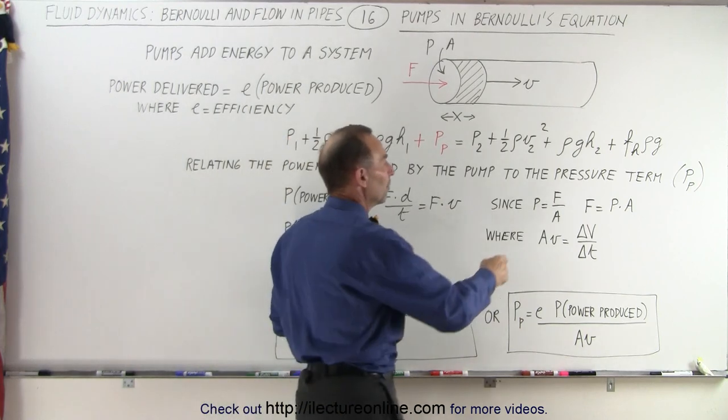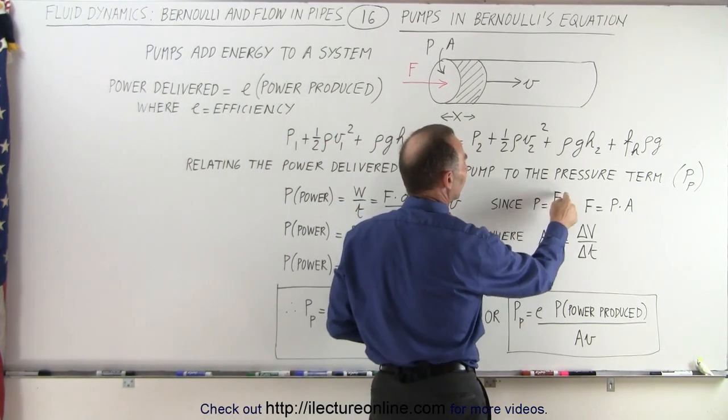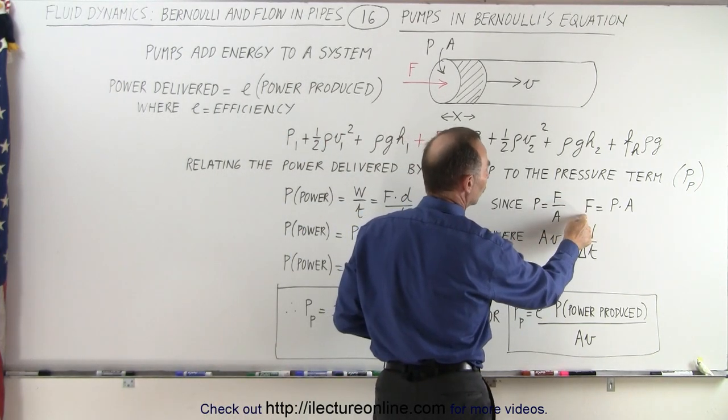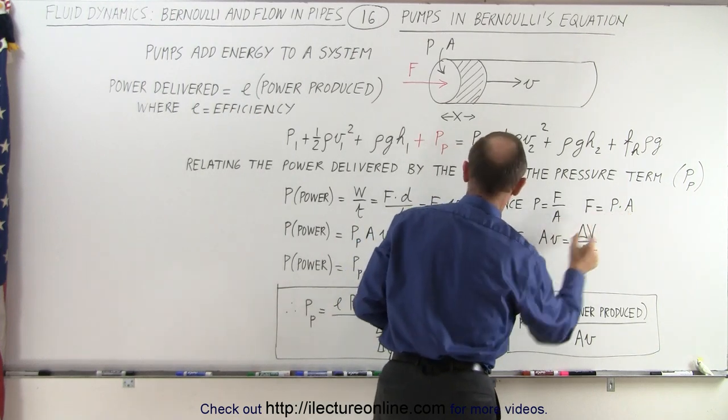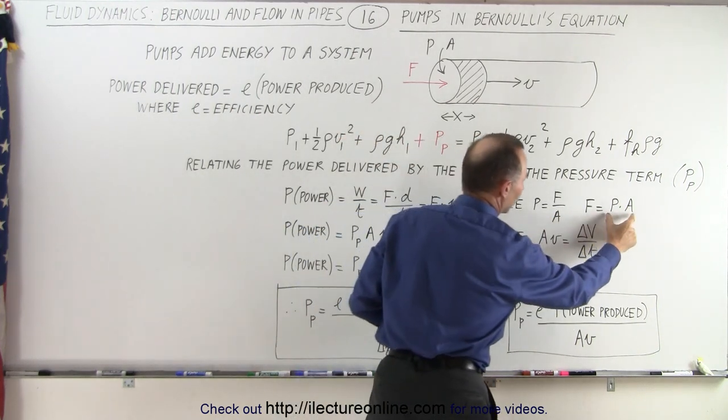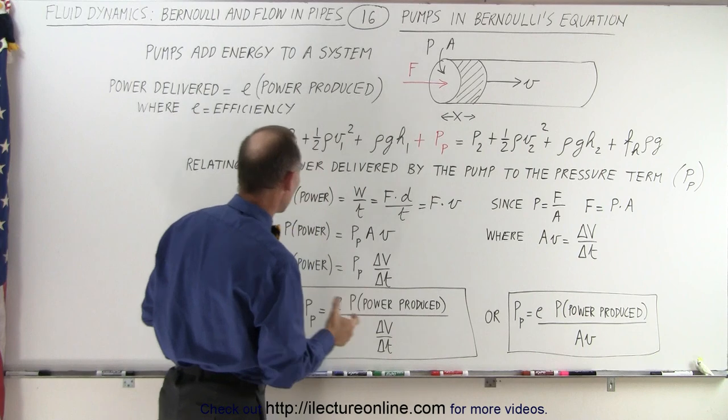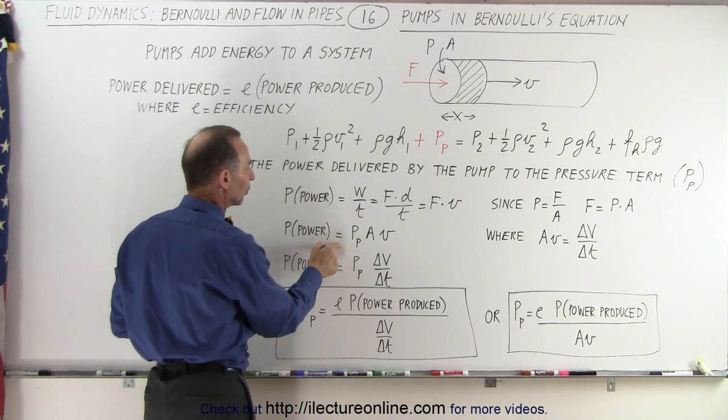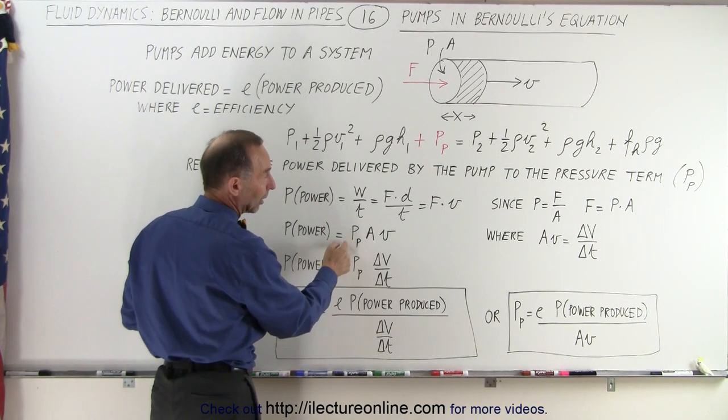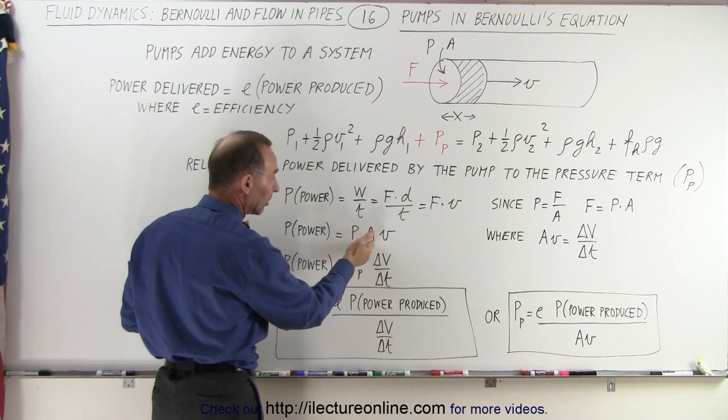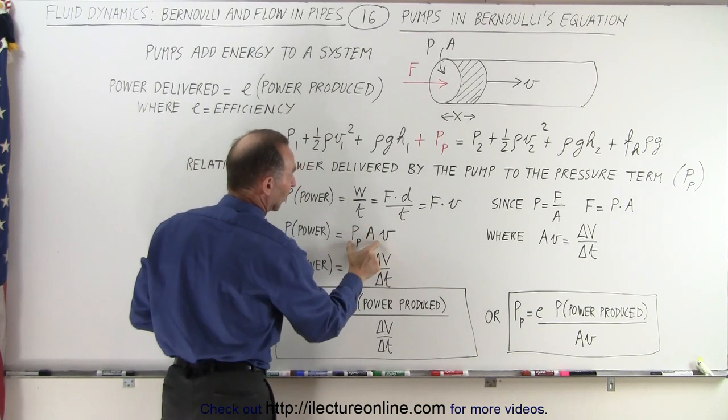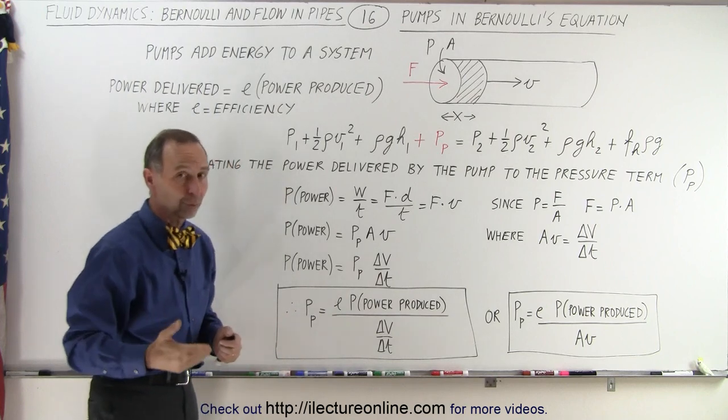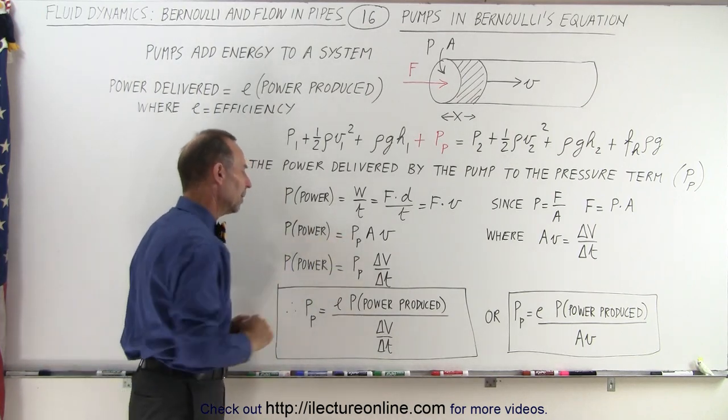Since pressure can be defined as force divided by area, force can also be expressed as pressure times area. So instead of force, we're going to replace force by pressure times area. So now we have the power of the pump equals the pressure of the pump times area times velocity, where the force is now replaced by pressure times area.